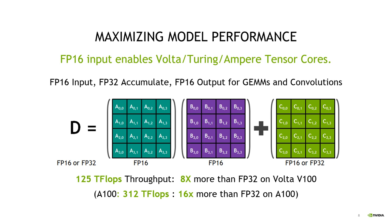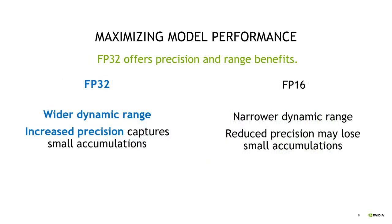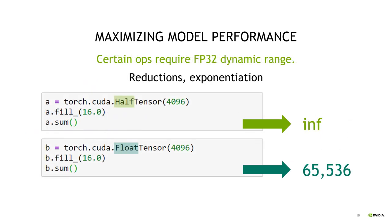This raises the question: why do we not run the whole model in FP16? FP32 has a wider dynamic range and, because of its increased precision, it can capture small accumulations that are beneficial for certain operations. For example, here's a sum over an array of 4096 elements each with a value of 16. If we try to do that sum in half precision, we actually get an overflow — the half precision can't represent this sum. In FP32 it's absolutely fine because it's well within the representable range.